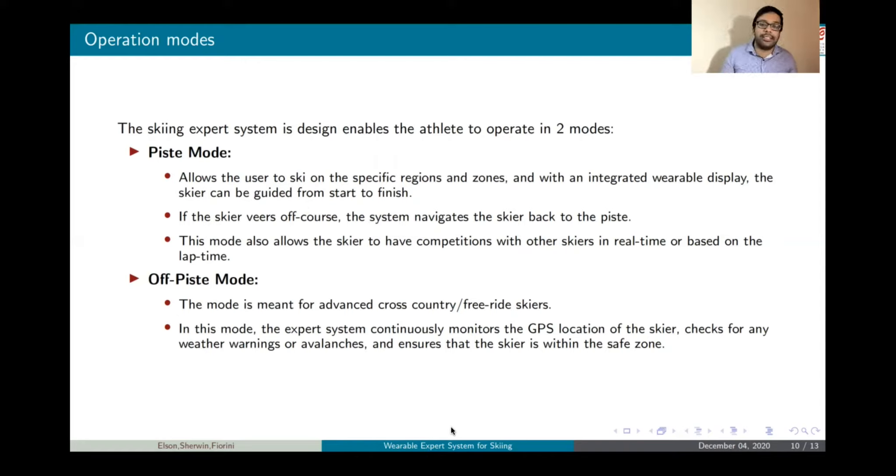And in off-piste mode, this mode is meant for advanced skiers or cross-country free ride skiers. There is no particular location. We do not restrict the skier to any particular location, but the skier is free to roam around wherever he wants to. But this comes with its own disadvantages, because there might be any weather hazards or avalanches. In this mode, our expert system continuously monitors the GPS location of the skier and also warns the skier if he is moving close to any weather hazard location or avalanches, so that skier can be safe and perform the skiing within the safe zone.